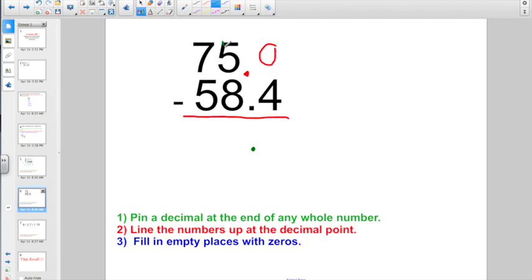0 minus 4? Can't do it, can I? So I'm going to cross out. Bring 1 over. 10 minus 4. Hey, that makes 6.